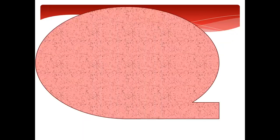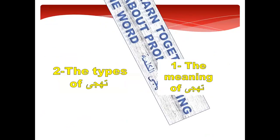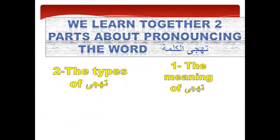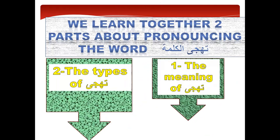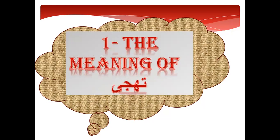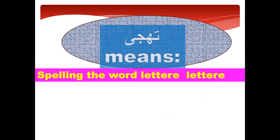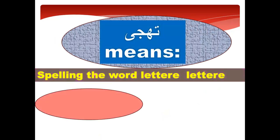In this video we will learn together pronouncing the word — Tahajji al-kalima. We will learn together two parts about pronouncing the word: the meaning of Tahajji and the types of Tahajji. Let's start with the meaning of Tahajji. Tahajji means spelling the word letter by letter.